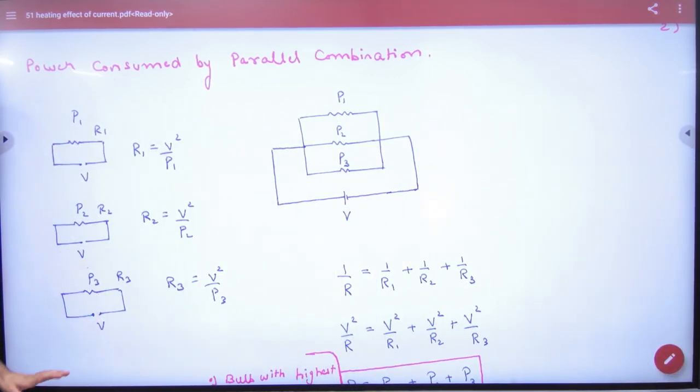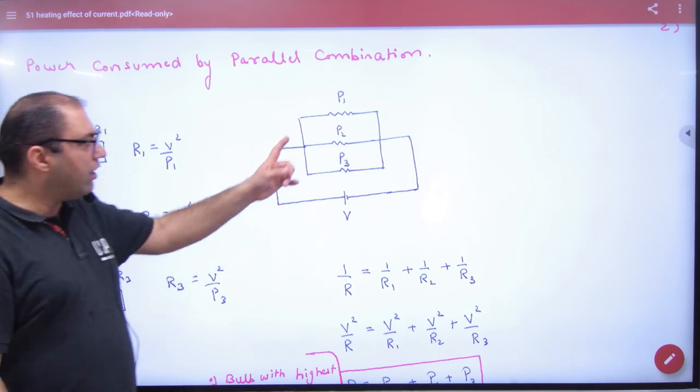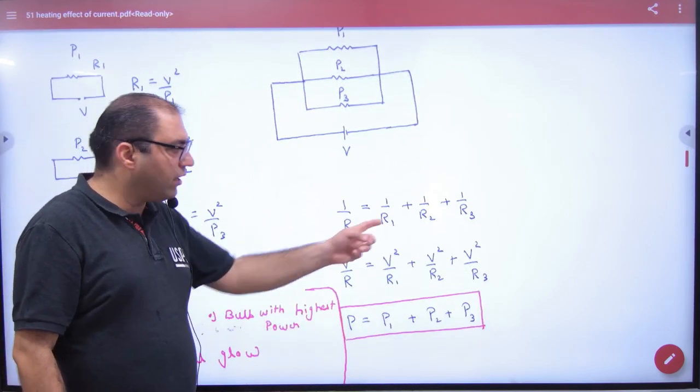job, there is no different resistance. And in parallel combination, for effective power, the first resistance will be in parallel